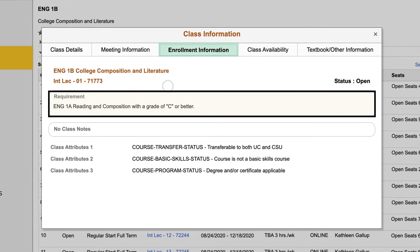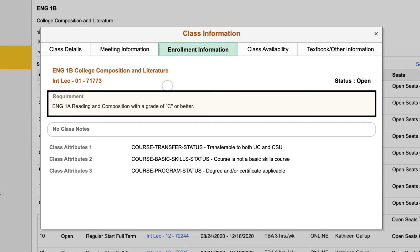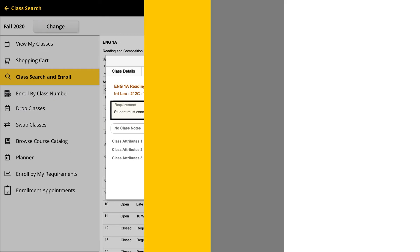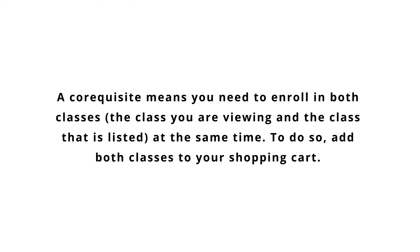Under Requirements, you will find information about any prerequisites you need to complete before you will be eligible to register for the class. You will also find any co-requisites the class may have. A co-requisite means you need to enroll in both classes — the class you are viewing and the class that is listed — at the same time. To do so, add both classes to your shopping cart.